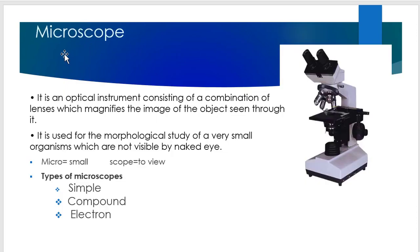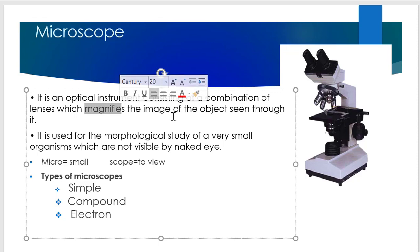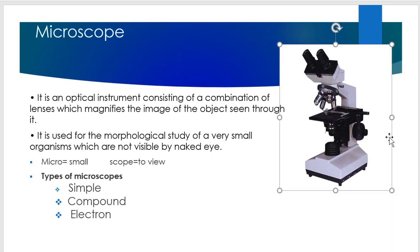The first equipment used in any microbiology lab is the microscope. It is an optical instrument consisting of a combination of lenses which magnifies the image of the object seen through it. It basically magnifies and also increases the resolution so that we can see the object in a magnified way. It is used for the morphological study — to see the shape as well as size — of any microorganism, especially very small organisms which are not visible by the naked eye.